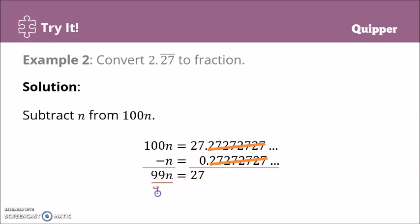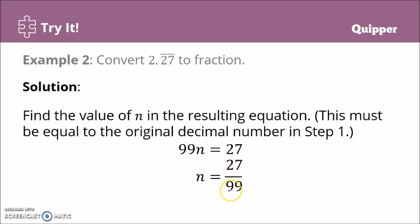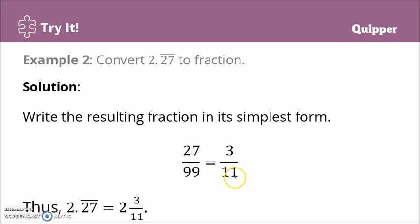We divide both sides by 99 to cancel out the 99, leaving N equals 27 over 99. Express your final answer in lowest terms, which is 3 over 11. They are both divisible by 9. Therefore, 2.27 bar equals, take note this is just the 27 bar. We have 2 that we set aside, so that's 2 and 3 over 11.